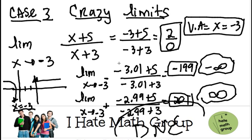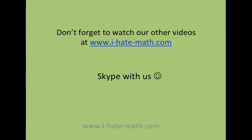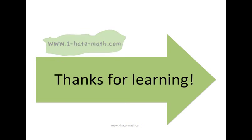In conclusion: case one is the happy limits — when you have a polynomial or function that doesn't give you a weird number, just plug in. Case two, the a-hole limits — try to factor to eliminate the hole. Case three, the crazy limits — when you can't factor and you have a vertical asymptote, the limit does not exist. I hope this crash review helps you with your quiz. Don't forget to watch our other videos, and you can also Skype with us. Thanks so much for learning!